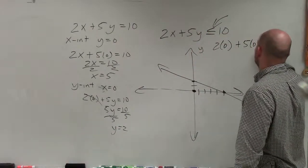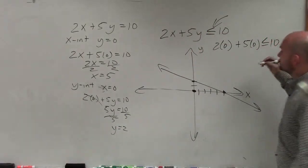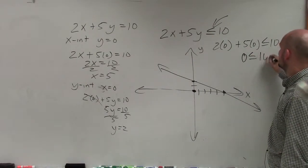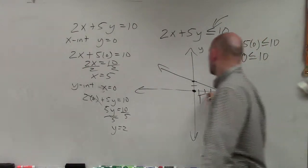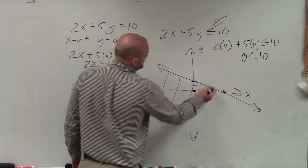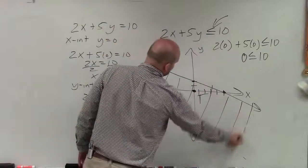And I'm going to make sure I plug it into my inequality, because I want to make sure, is this going to be true or not? Well, 2 times 0 is 0, 5 times 0 is 0. So I have 0 is less than or equal to 10, which obviously that is true. So since one point below the line is true, that means all the points below the line are going to be true.